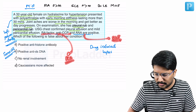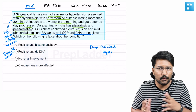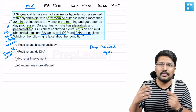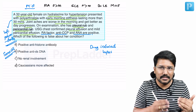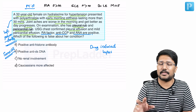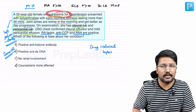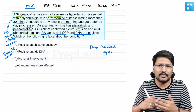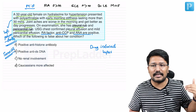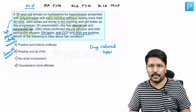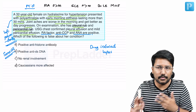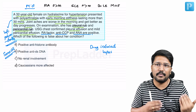Anti-CCP is more specific than RA factor, so one might strongly think of rheumatoid arthritis, yet the diagnosis is still drug-induced lupus. If you look at classification criteria for rheumatological disorders, you can diagnose SLE or RA when there is no alternative explanation. Here, all manifestations can be explained by drug-induced lupus. Anti-CCP can be positive in normal populations in meager numbers, in other rheumatological disorders, and even in up to 10% of SLE patients.